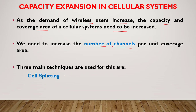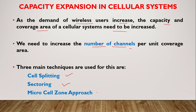There are three main techniques to increase the capacity of a cellular system: number one is cell splitting, number two is sectoring or cell sectoring, and the third one is the microcell zone approach. These are the three main techniques used to increase the capacity of a cellular system.